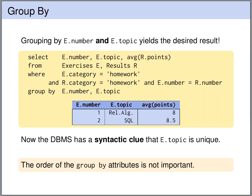The SQL query from the last slide can be repaired — turned into legal SQL — by adding TOPIC in the GROUP BY attributes. So the groups are now formed by equality on the NUMBER and the TOPIC. Two rows are now in the same group if they have the same value for E.NUMBER and E.TOPIC, and otherwise they are in different groups. Now the database management system has a syntactic clue that E.TOPIC has a unique value for each group, so we are allowed to refer to E.TOPIC in the SELECT clause. The query gives us the desired result: the average points for each homework topic.